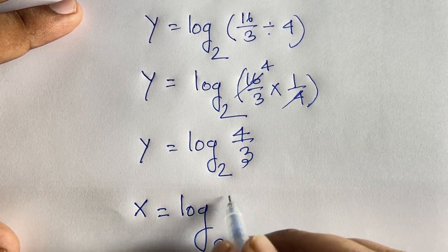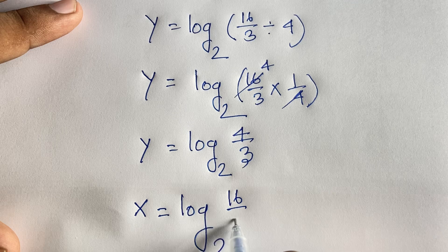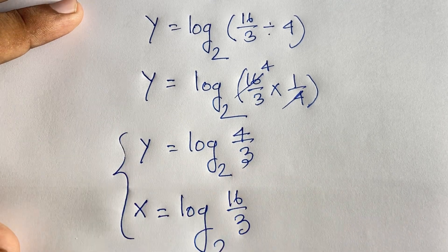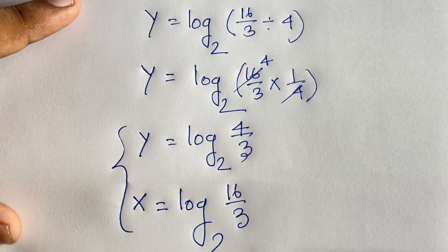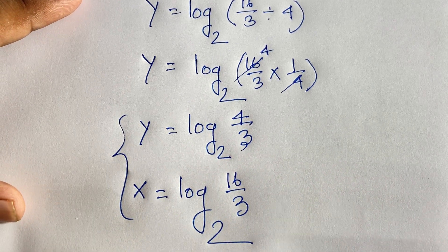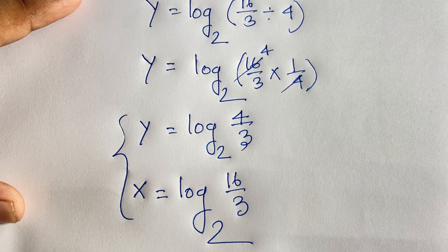So our final answer is: y equals log base 2 of (4 over 3) and x equals log base 2 of (16 over 3). This is our final answer in this math olympiad question. Thank you all. If you enjoyed this video, please subscribe to my channel for other interesting videos. Goodbye, take care.